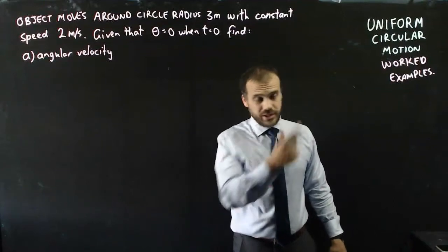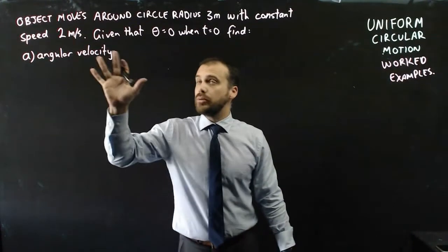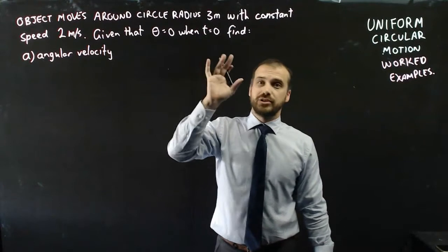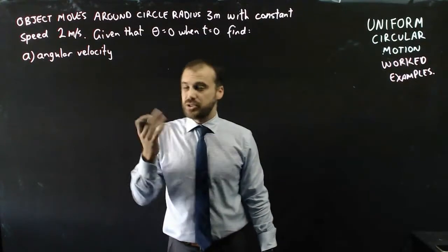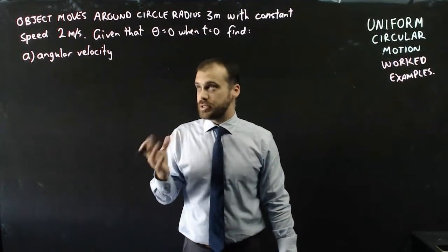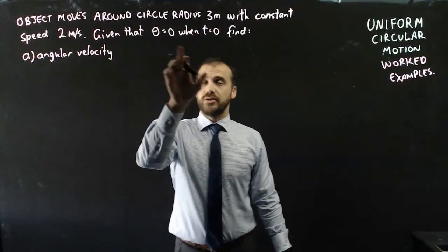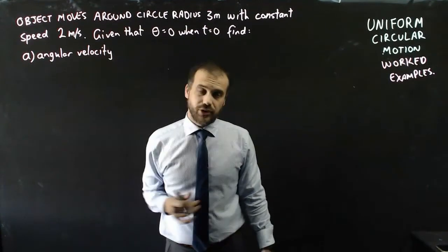Uniform circular motion, worked examples. An object moves around a circle with radius 3 metres with constant speed 2 metres per second. Given that theta equals 0 at t equals 0, find the angular velocity.